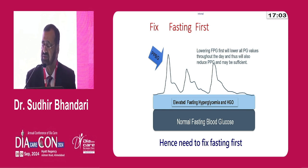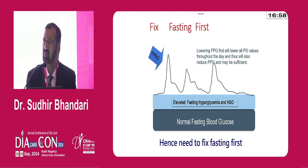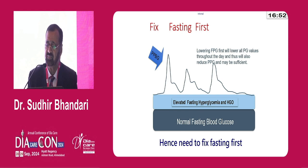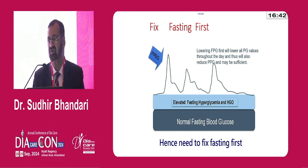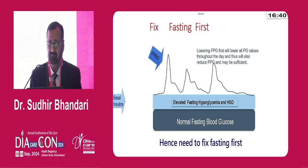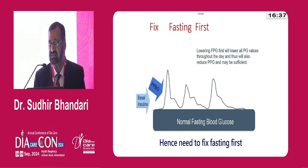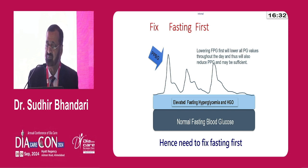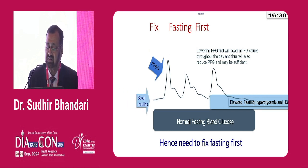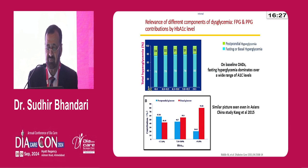There are two components of diabetes: fasting hyperglycemia and post-meal hyperglycemia. It is more important to fix fasting first. Lowering the fasting glucose will lower all glucose values throughout the day and thus also reduce post-prandial glucose. Fixing the fasting should be the integral part of the approach to achieve perfect glycemic control. Basal insulin takes care of fasting hyperglycemia and brings down all post-meal levels as well.